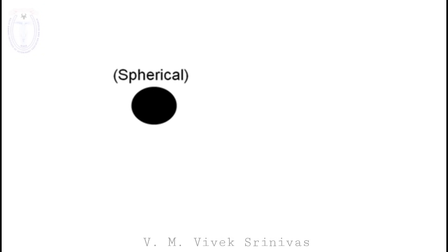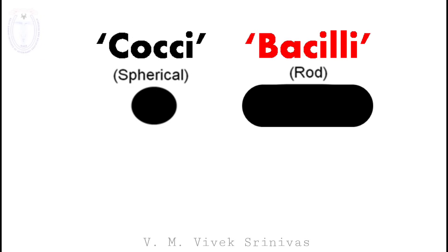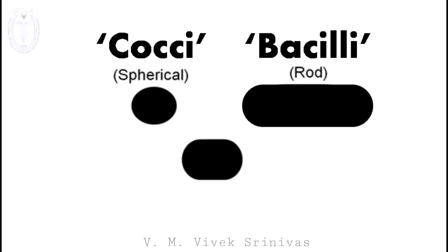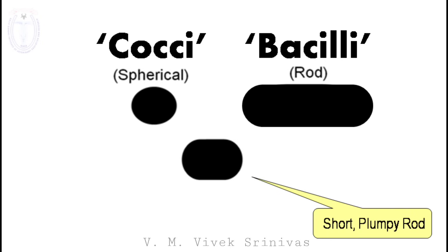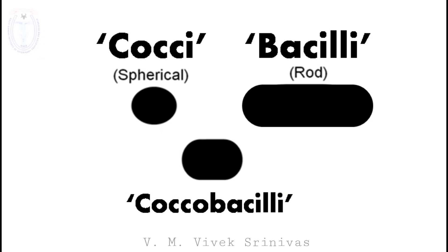Some bacteria are spherical shaped; this type of bacteria is called cocci. The bacteria can also be rod shaped; this type is called bacilli. If it is in between — that is, a short plump rod shape — then they are called coccobacilli. These are the major shapes of the bacteria.